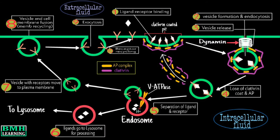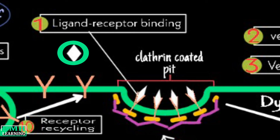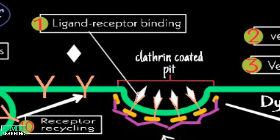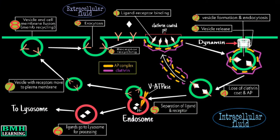Now let's know the details of the mechanism. In order to have a clear picture of this pathway, I have divided it into several steps. The first step is the ligand-receptor binding. So the ligand binds to the receptor. Now these receptors are mainly concentrated in clathrin-coated pits. Before we go ahead, you must gather some knowledge regarding clathrin-coated pits.